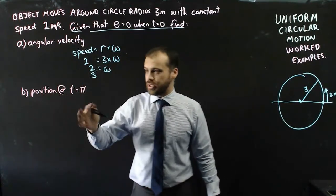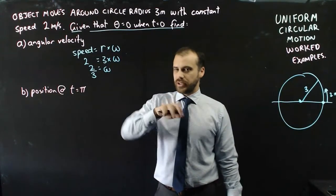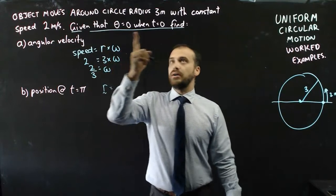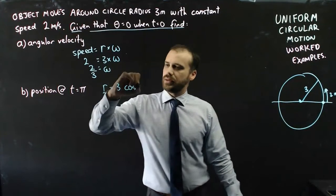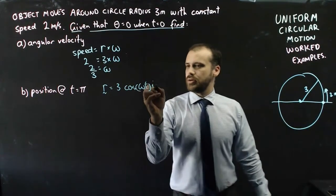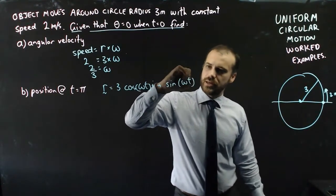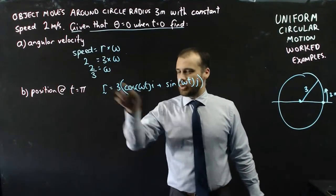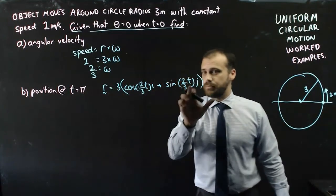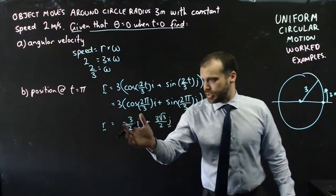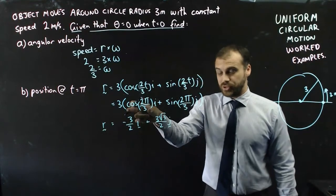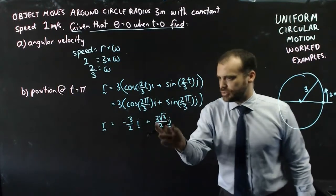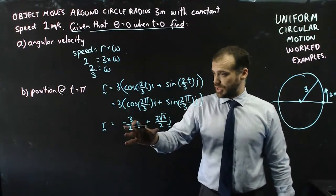Next, we're asked for the position of our object at time equals pi. We need a position equation, which is: r(t) = 3[cos(ωt) i + sin(ωt) j]. I already know that omega is 2/3, so I substitute that in. To find position at time pi, I sub pi in. I need the exact value of cos(2π/3) times 3, which gives negative 3/2 i, and sine(2π/3) times 3 for the j component.